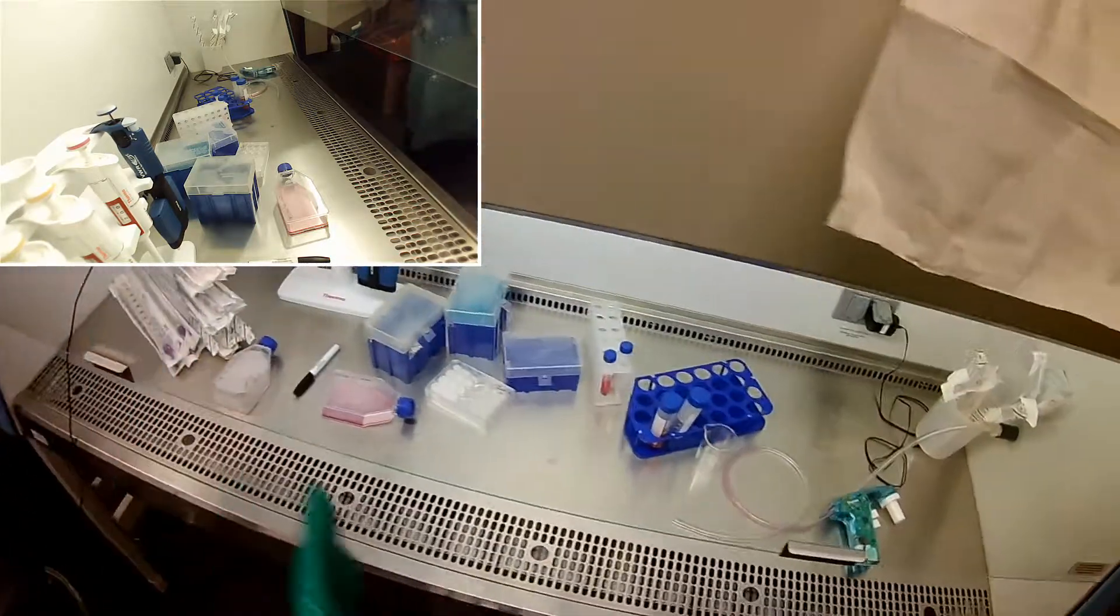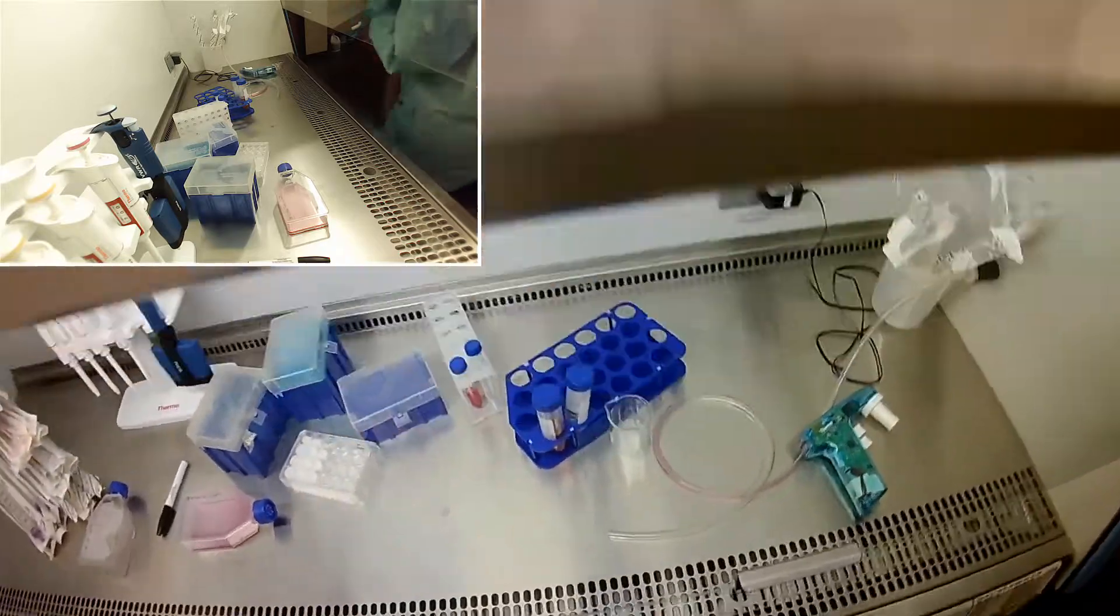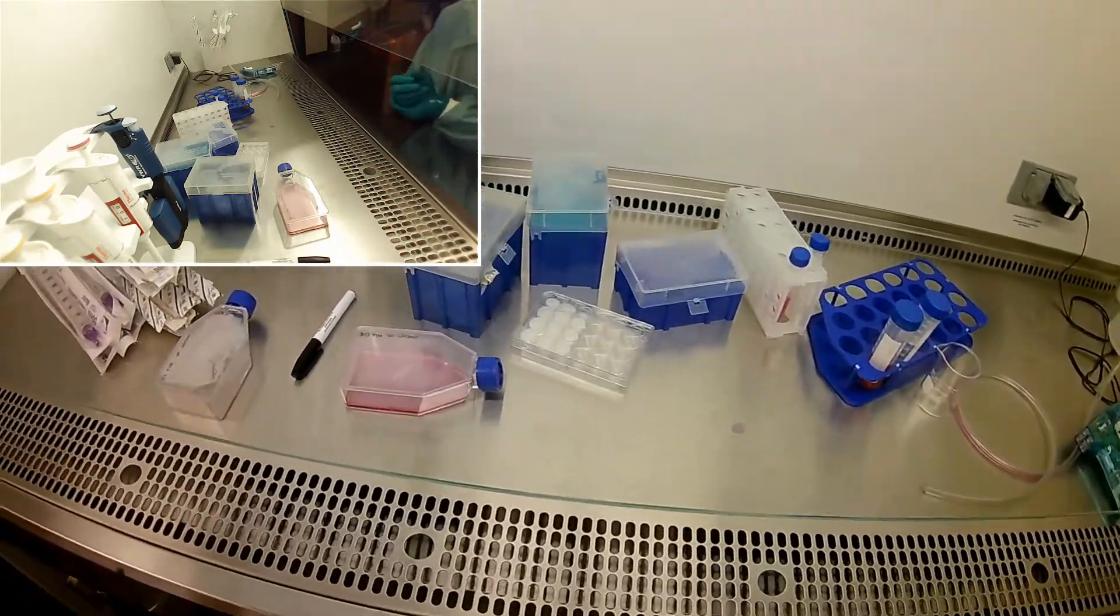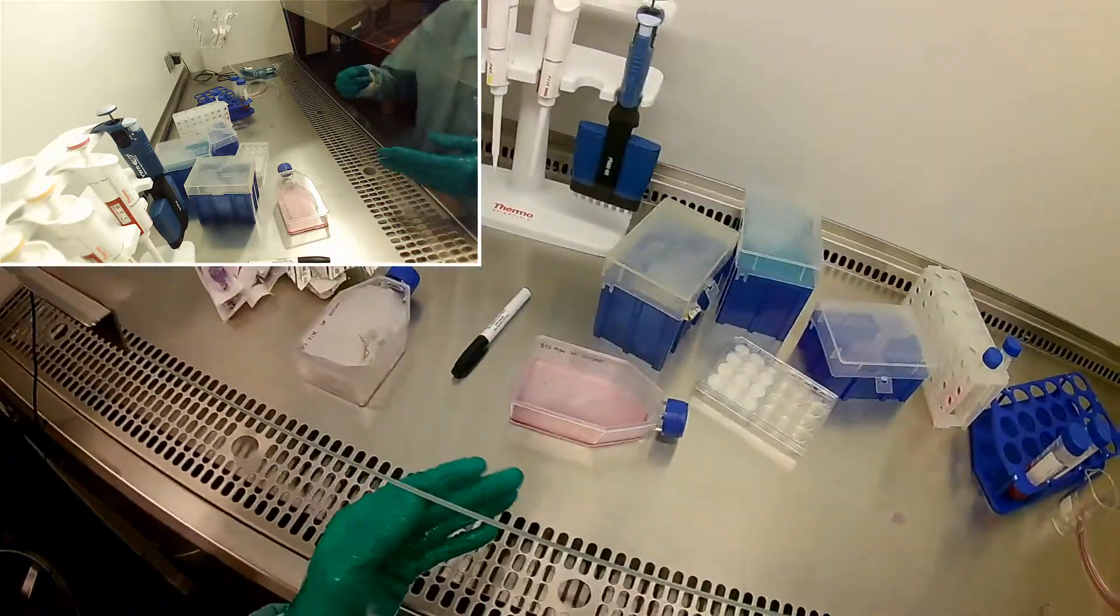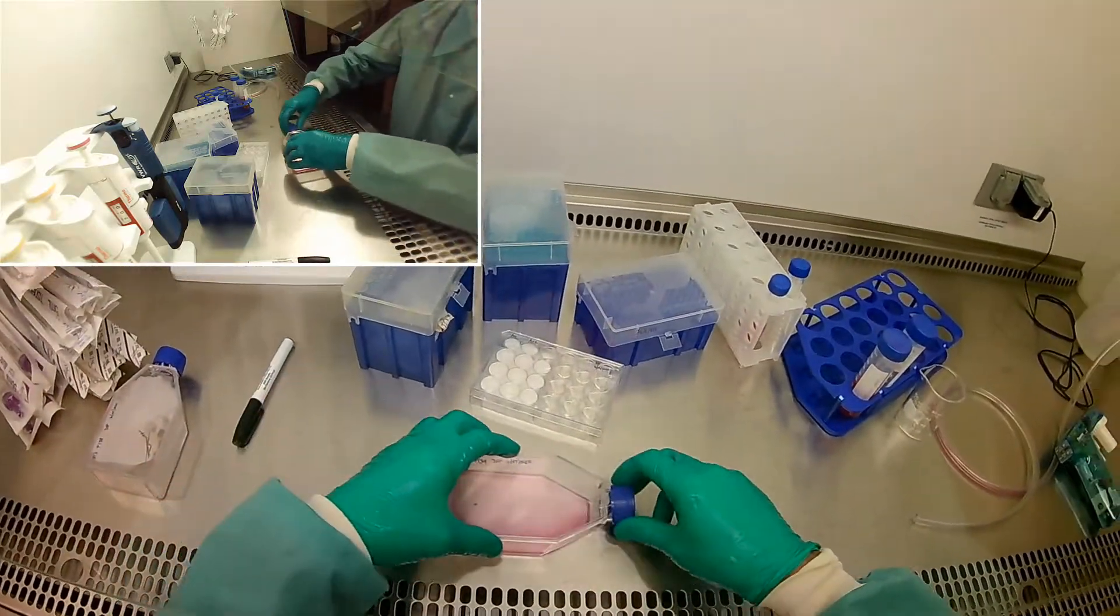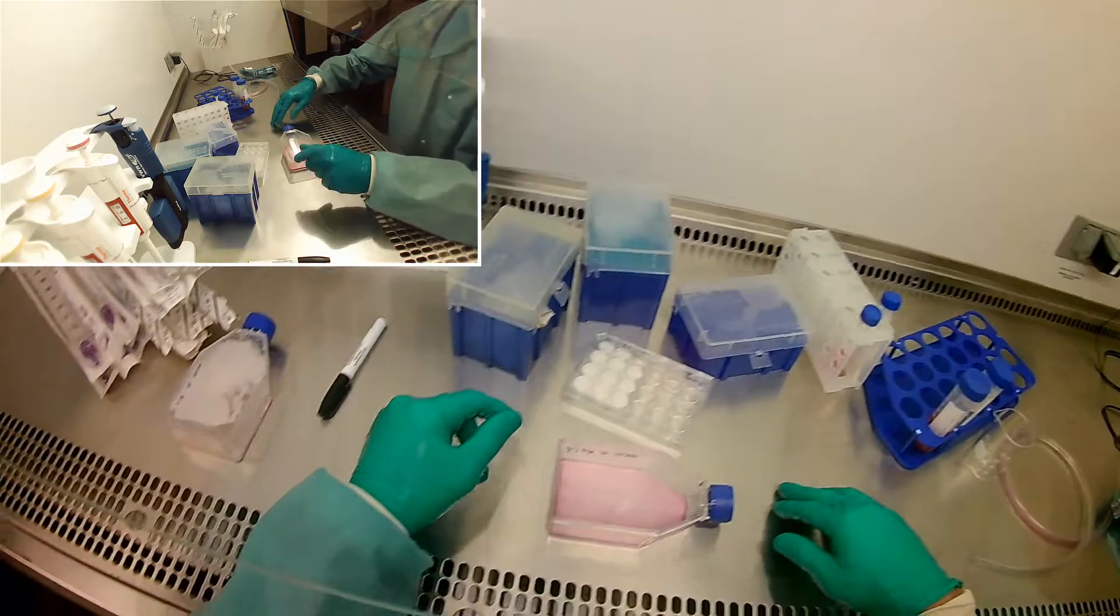We know how many cells we have. Interestingly, I counted a total of 870,000 cells in that flask. So my prediction of 800,000 to a million was pretty dang good.